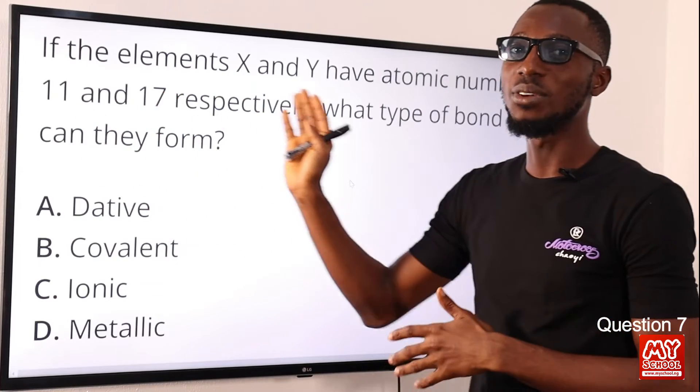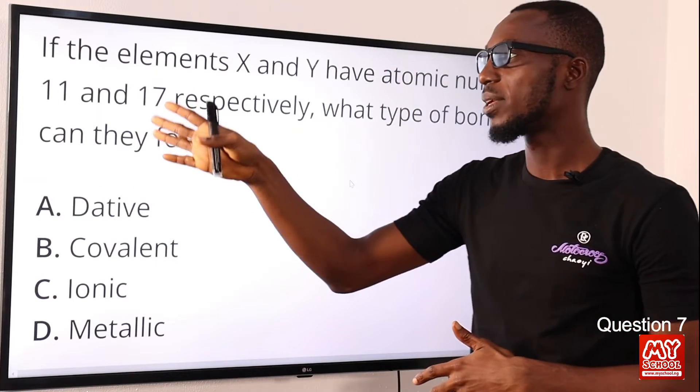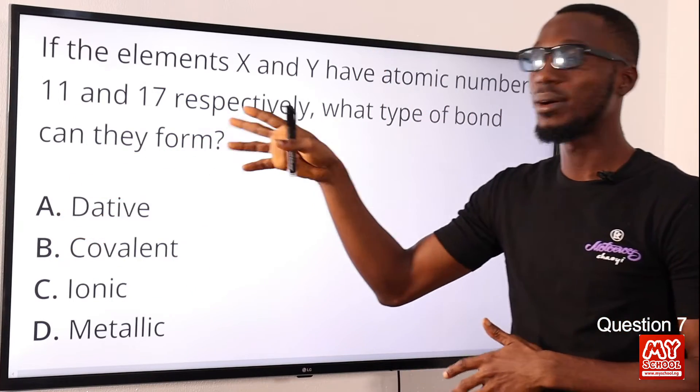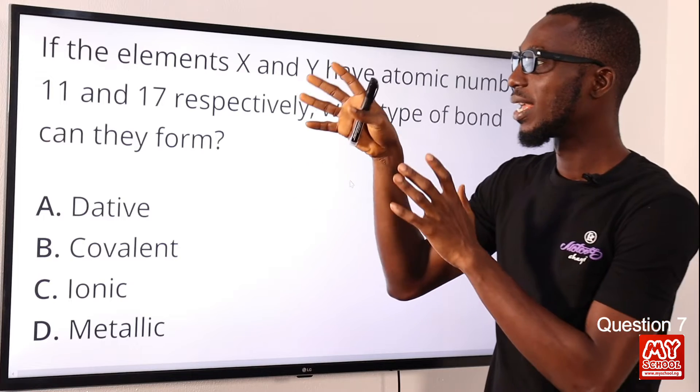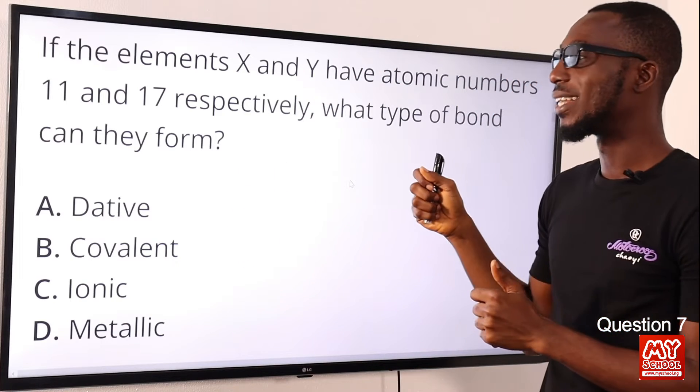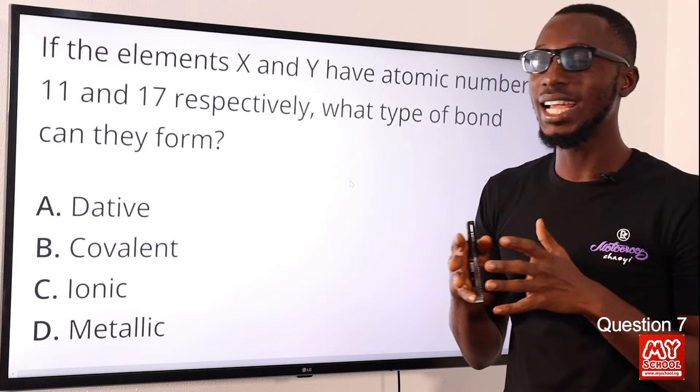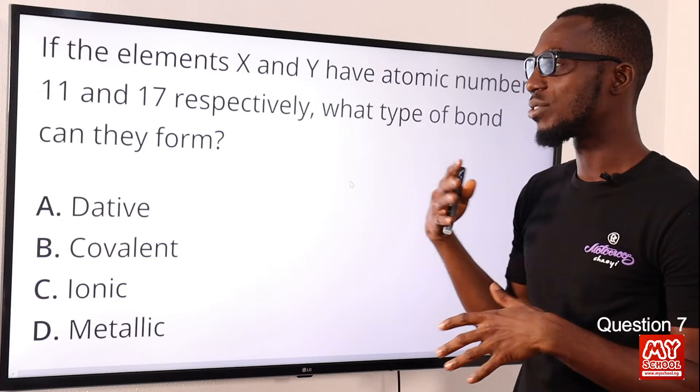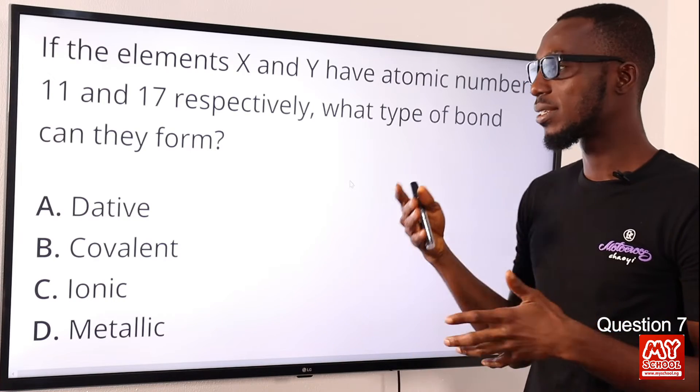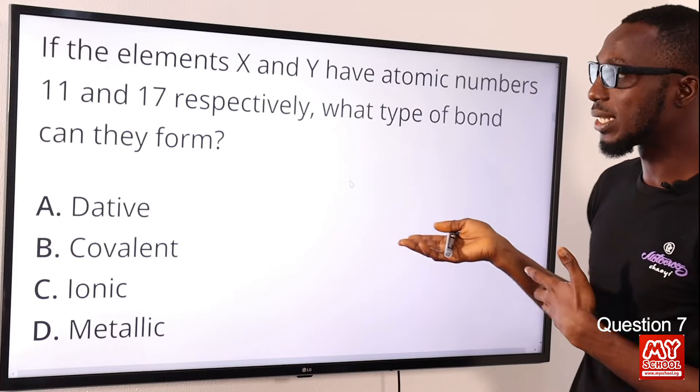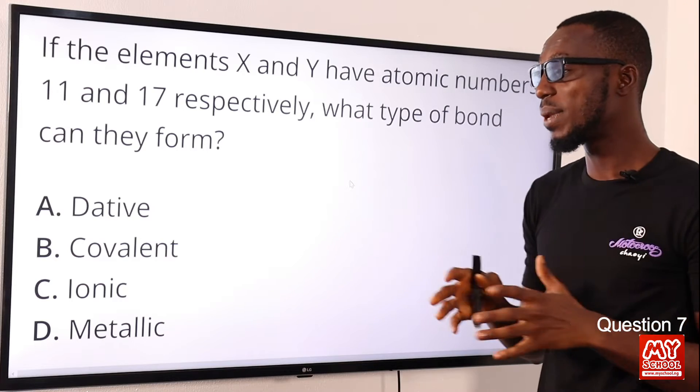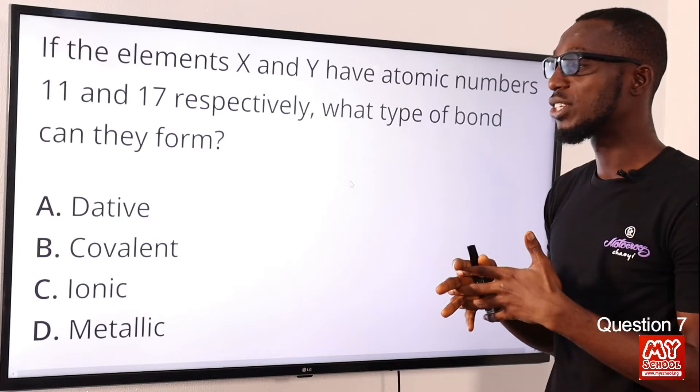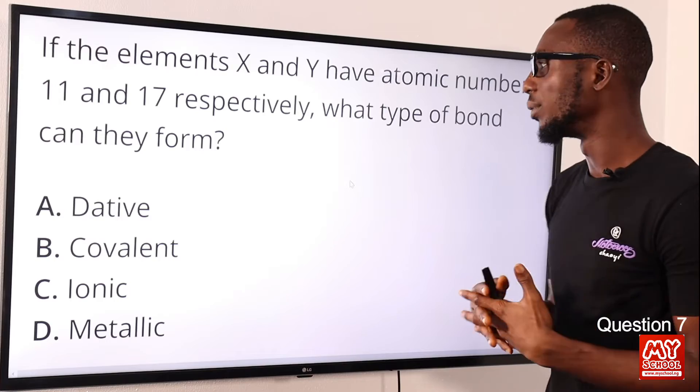That means we are looking at sodium and chlorine—sodium chloride, your common salt. Definitely sodium is a metal, chlorine is a non-metal. Metal donates, non-metal is the receiver. We can see that what will happen here is ionic kind of bond, because there's a donor and there is a receiver—someone is giving an electron and someone else is receiving. I can put it simply as ionic bonding or electrovalent bond. What type of bond can they form? Option C: ionic bond.